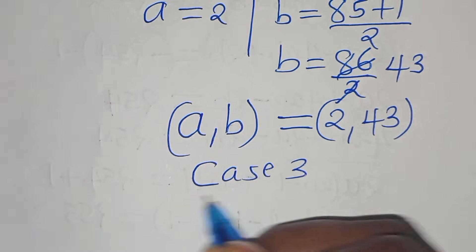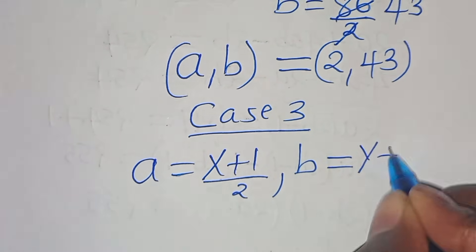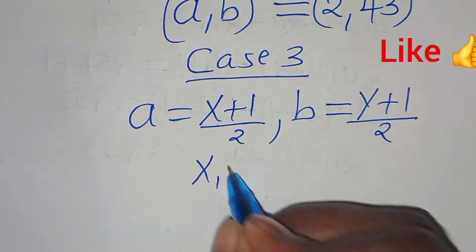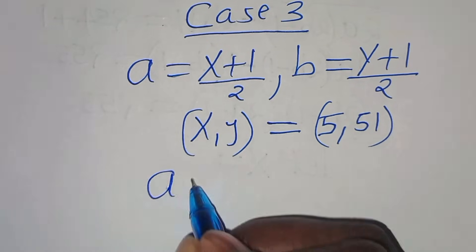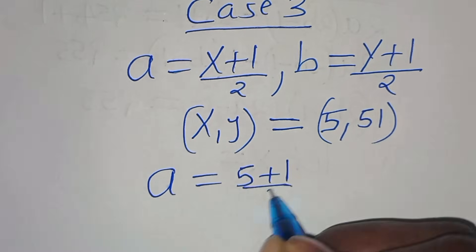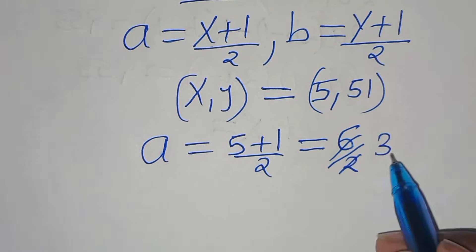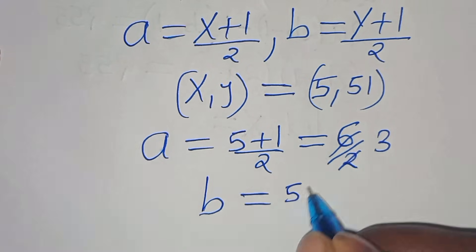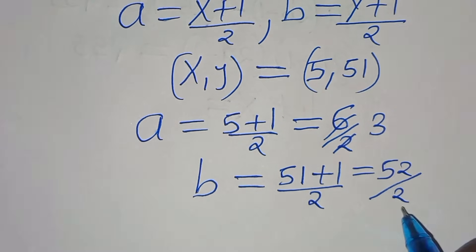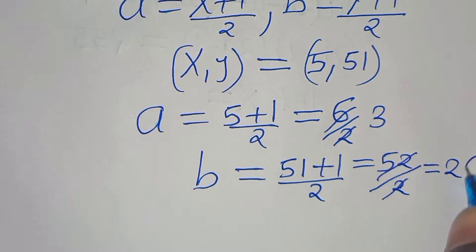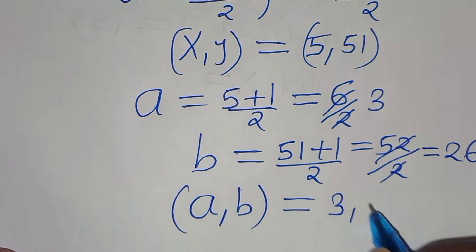For Case 3, x and y are 5 and 51. So a equals (5 plus 1) over 2 equals 6 over 2 equals 3, and b equals (51 plus 1) over 2 equals 52 over 2 equals 26. The third solution is (a, b) equals (3, 26).